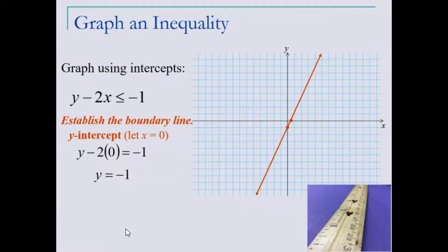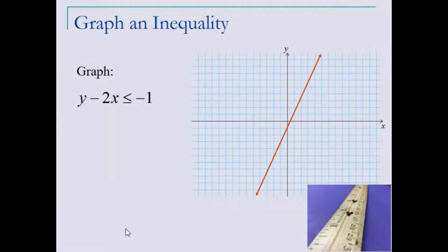Next, we need to determine which half of the plane provides the solutions to this inequality, the points that will make a true statement. To do that, it's helpful to have y by itself. In other words, we're transforming this linear equation into slope-intercept form, and we're looking for y values that are less than this line.